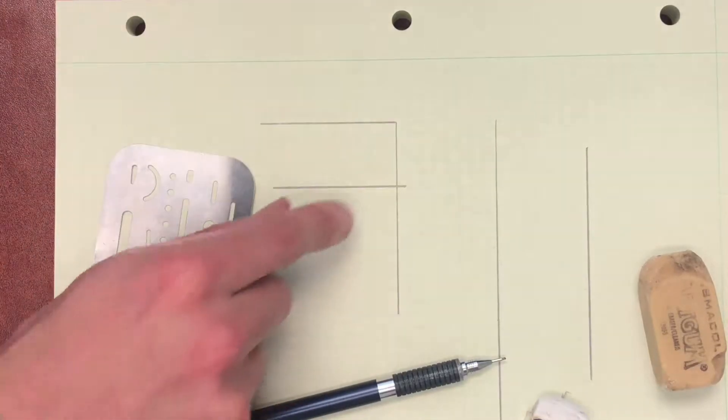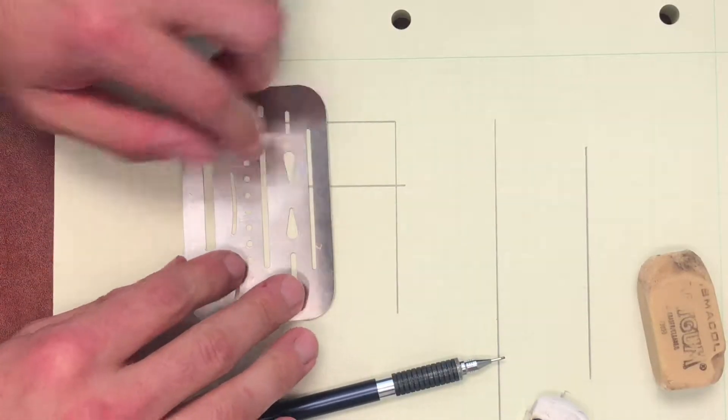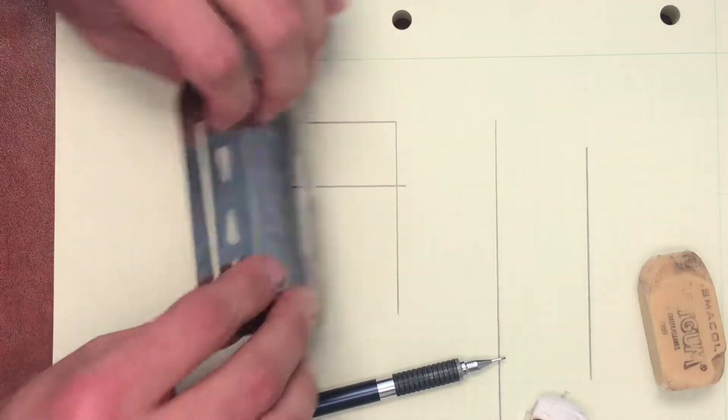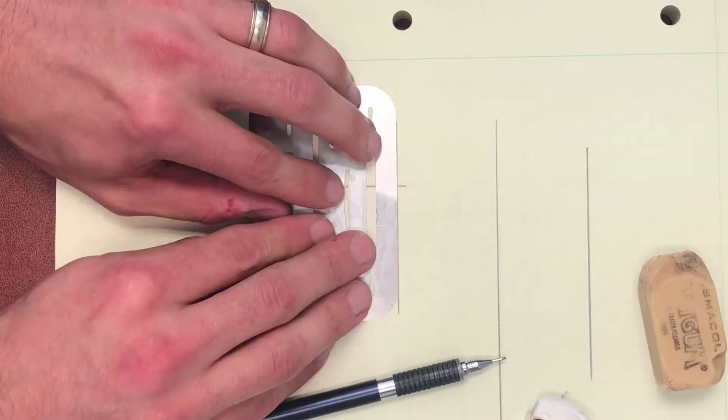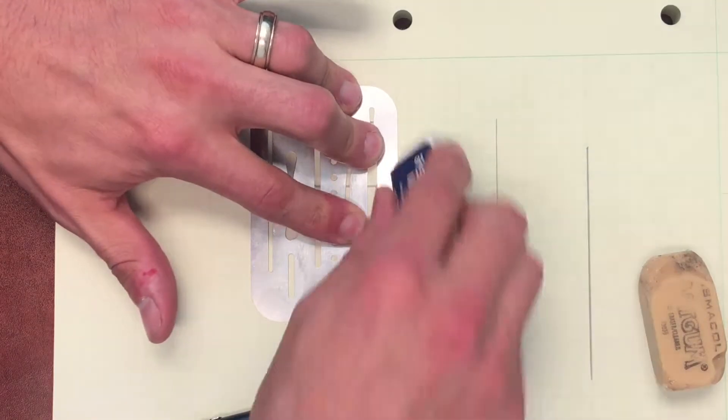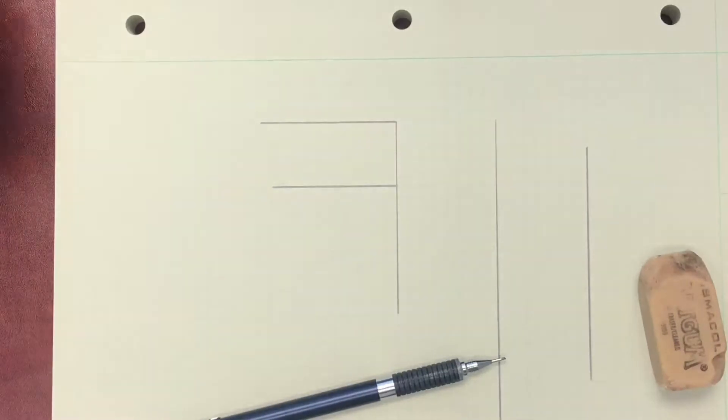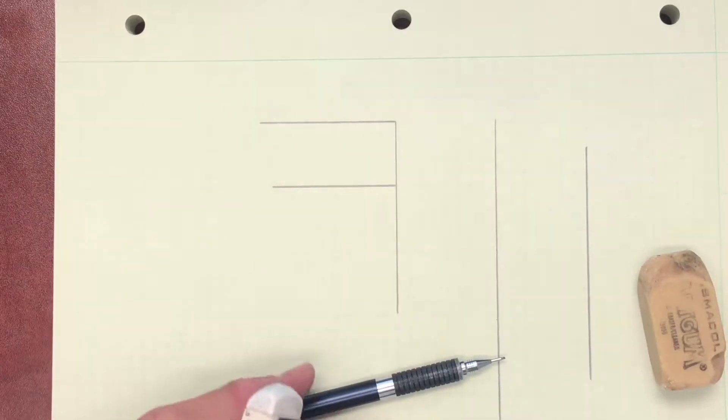One thing is if you have a line that extends out past a visible line you want to clean up, you want to erase just the end that extends past that, you can do so by putting your eraser guard down and grabbing your eraser and erasing. And you'll see that it creates a nice clean edge right there.